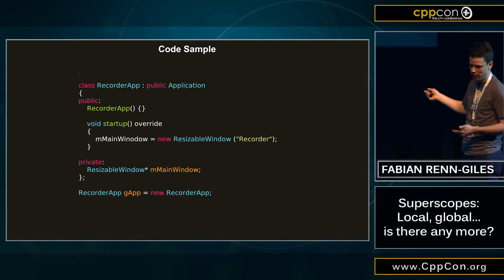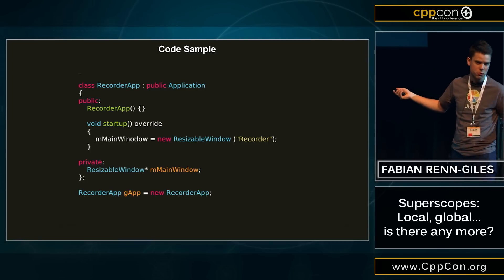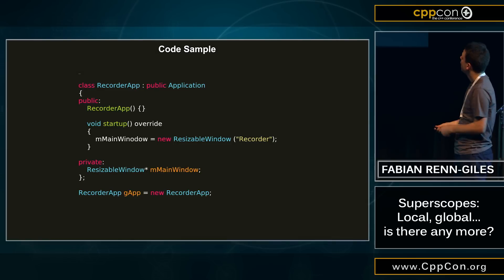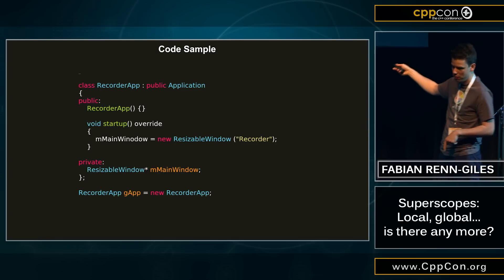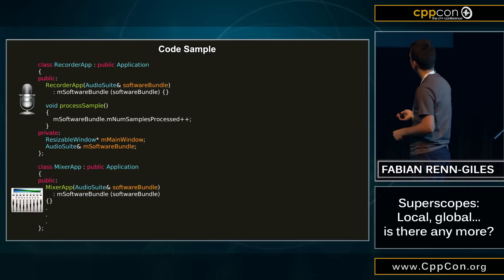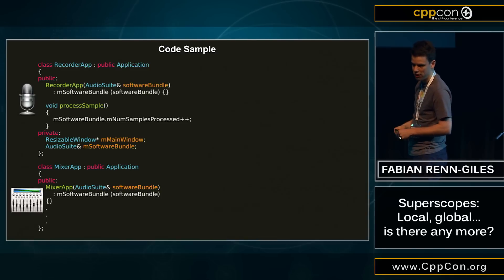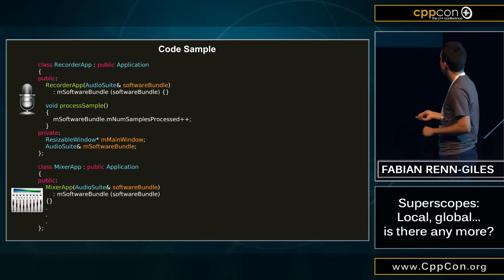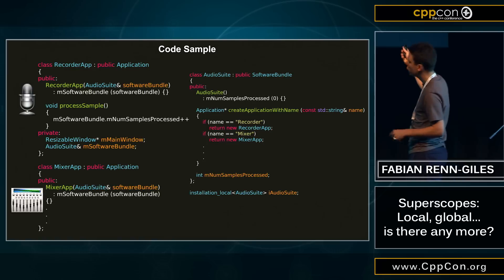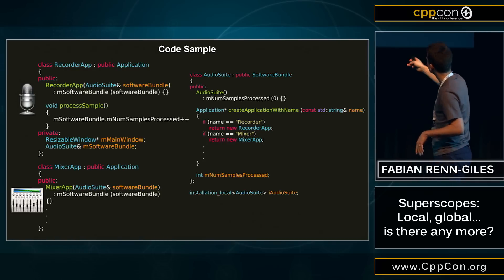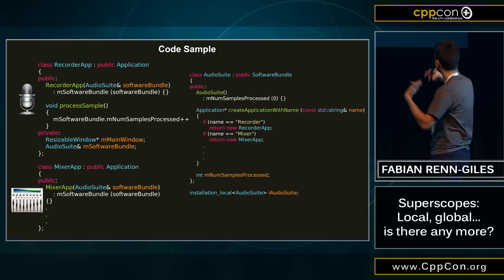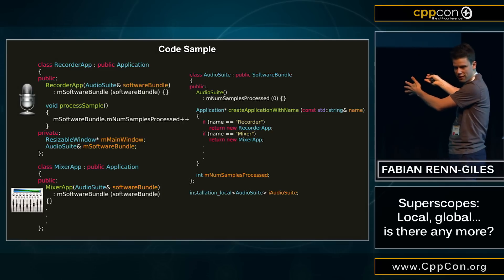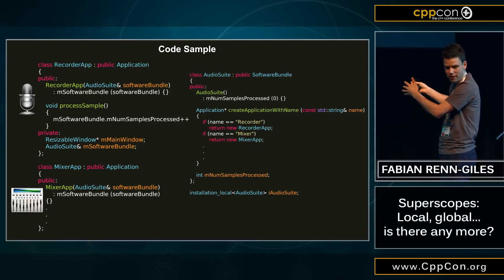Let's look at some code. Before `installation_local`, a typical Qt or JUCE application would have an application class with the application instance as a global variable - you can see that last line at the bottom. Now for my software bundle, I have two application classes on the left side. And in the same file you have a software bundle class, and look at the very last line - it's not a global variable, it's an `installation_local` variable.